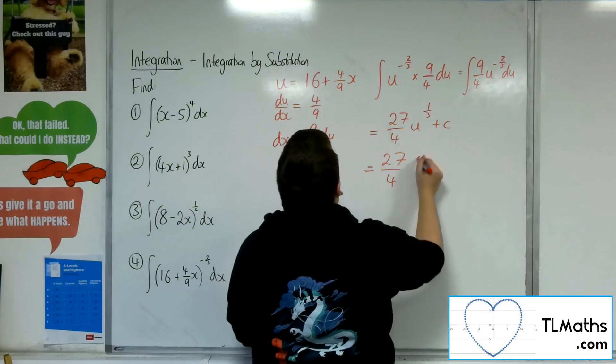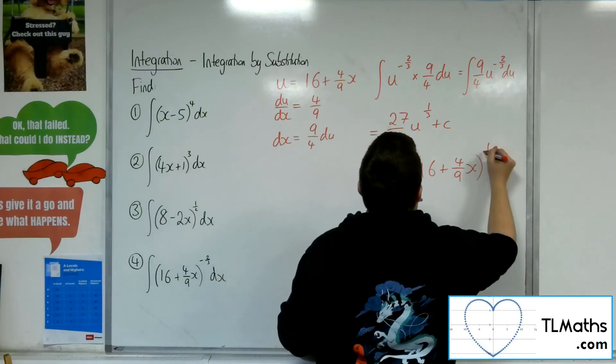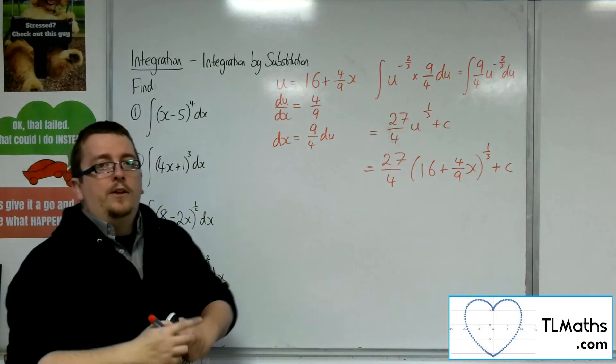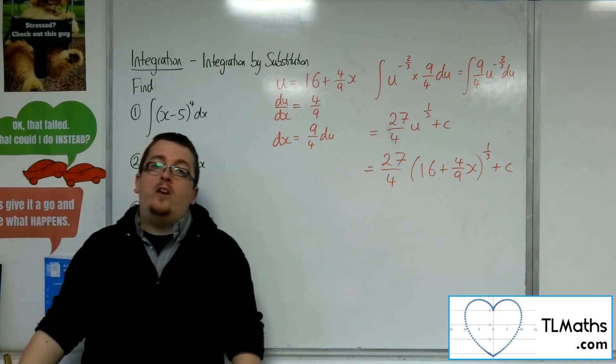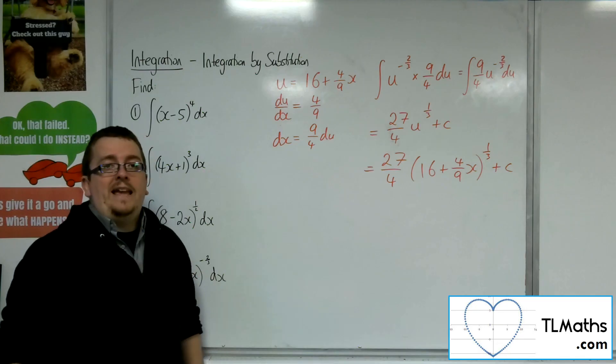Pop the u back in. And we're done. So it makes what could be quite a fiddly reversing the chain rule into quite a straightforward cranking handle and get your result out using integration by substitution.